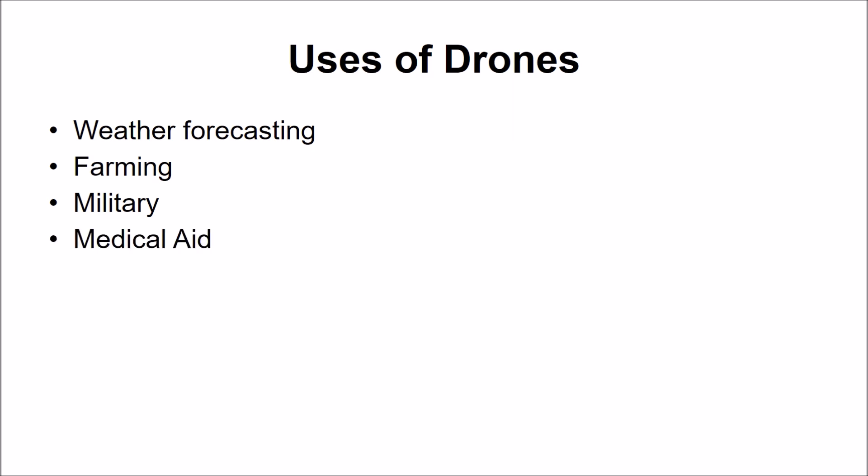Since drones are relatively unaffected by harsh climatic conditions, they are a safe and effective way of providing military intelligence. Fourth, Medical Aid: drones are one of the easiest ways of providing emergency medical aid to stranded people. Suppose there is a flood and there is an urgent need to provide medicines across a river — drones can handle this task very easily.